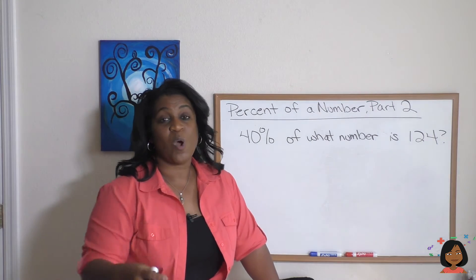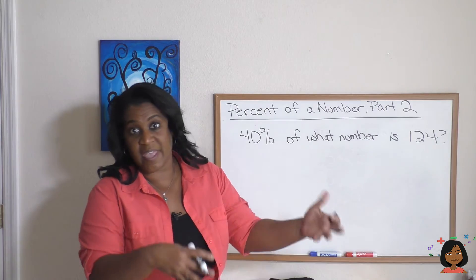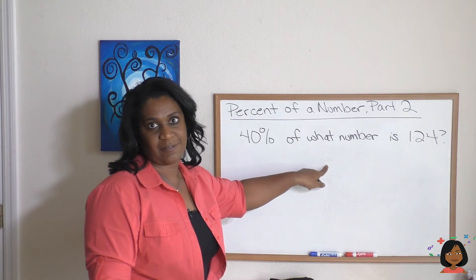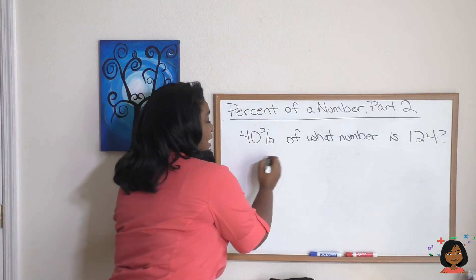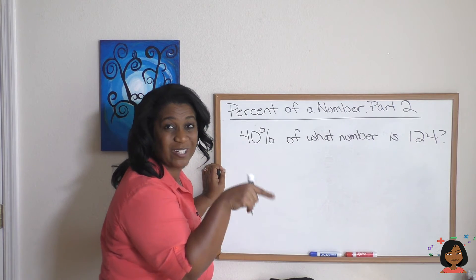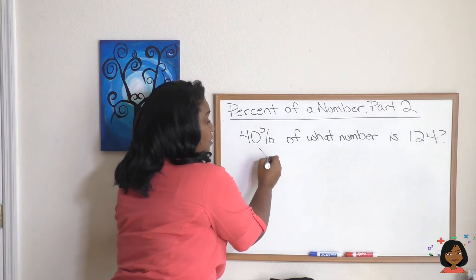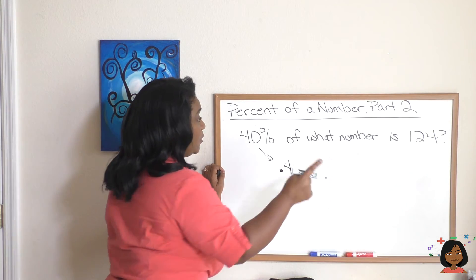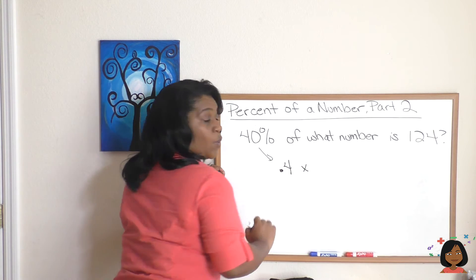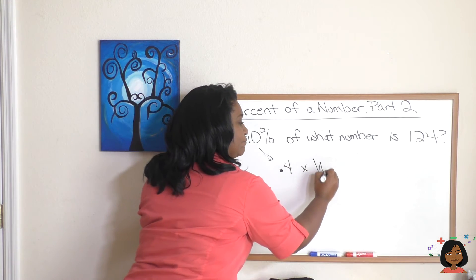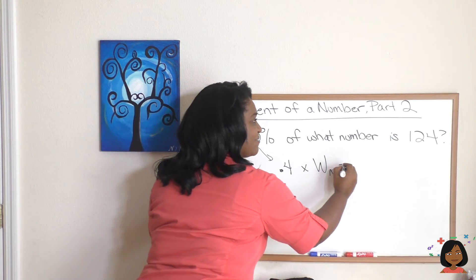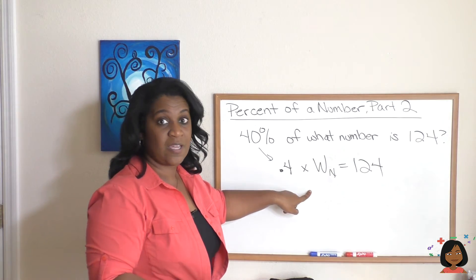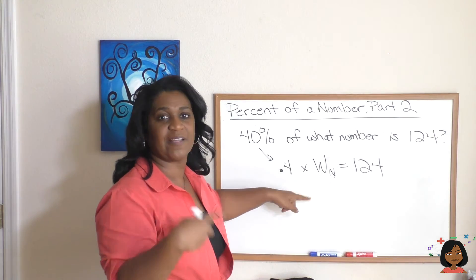Now here's a different kind of problem — we don't always have to find "what percent." Here I've given you the percent but we have to find the number. You still translate. 40 percent — we turn that into a decimal: 0.40, which is the same as 0.4. Of what number is 124? We still have a missing number in multiplication, so we do the opposite to find it — we divide.